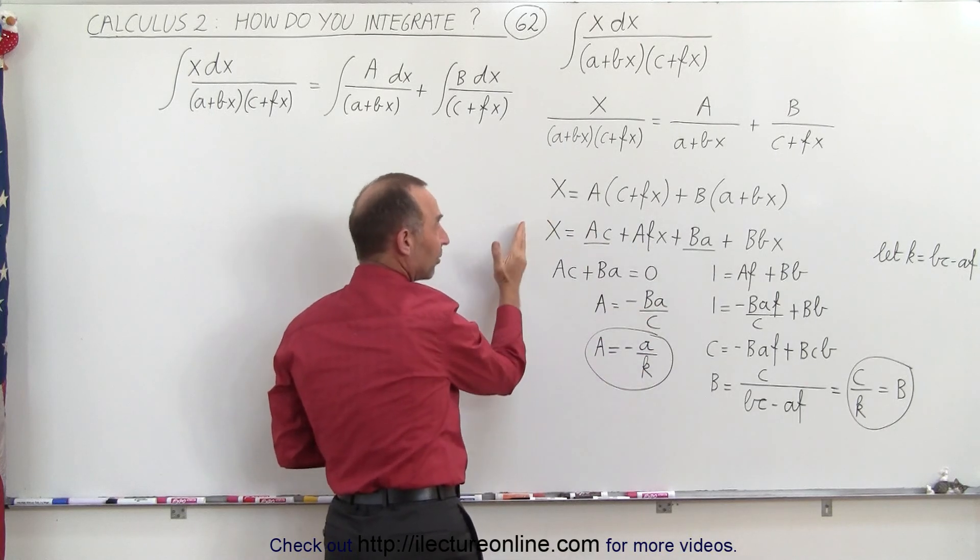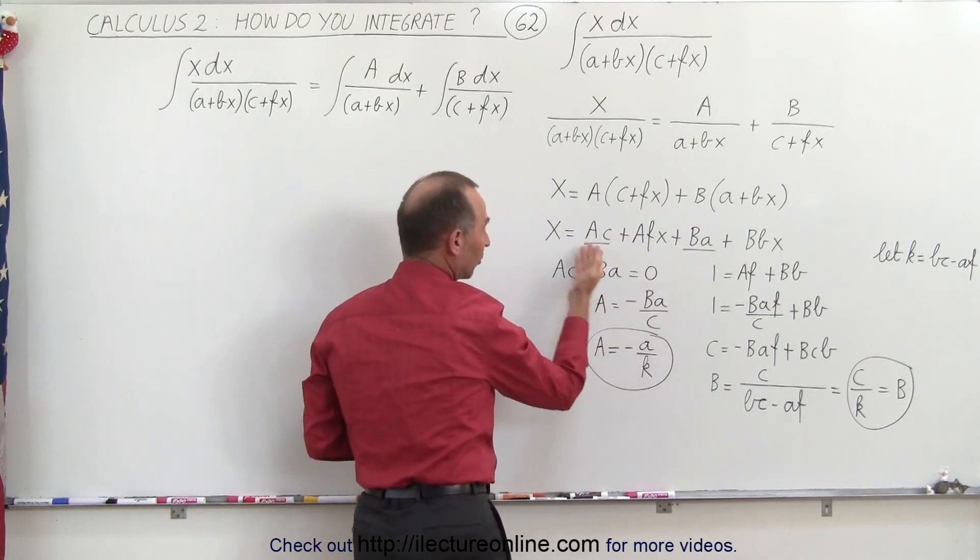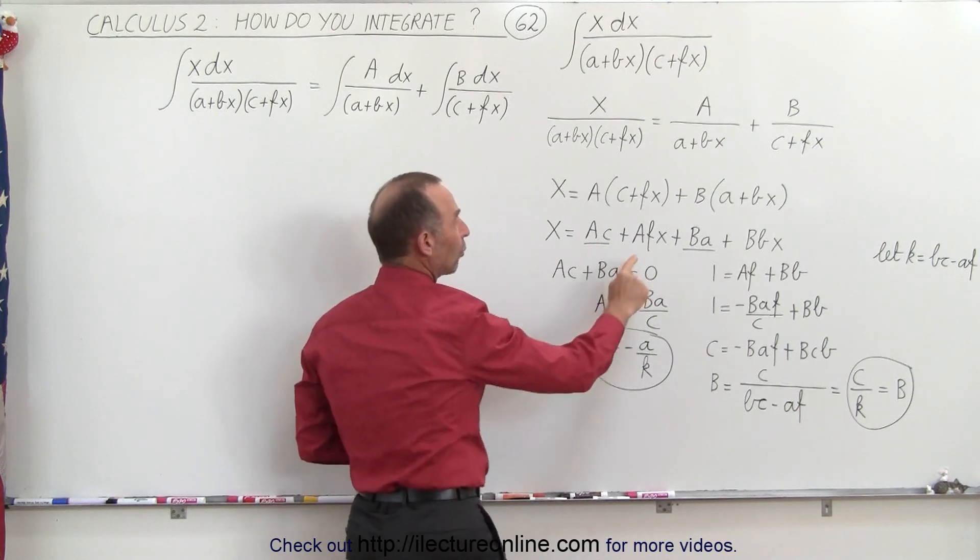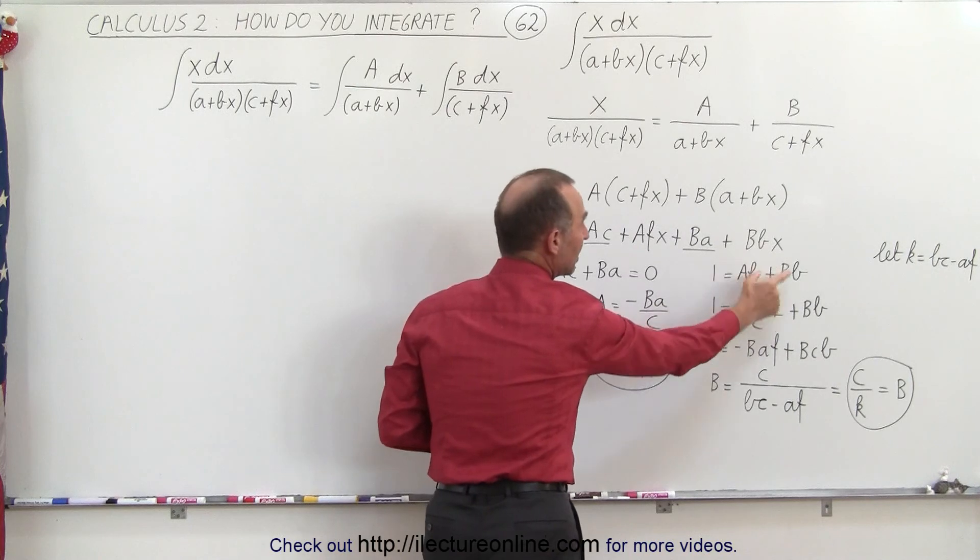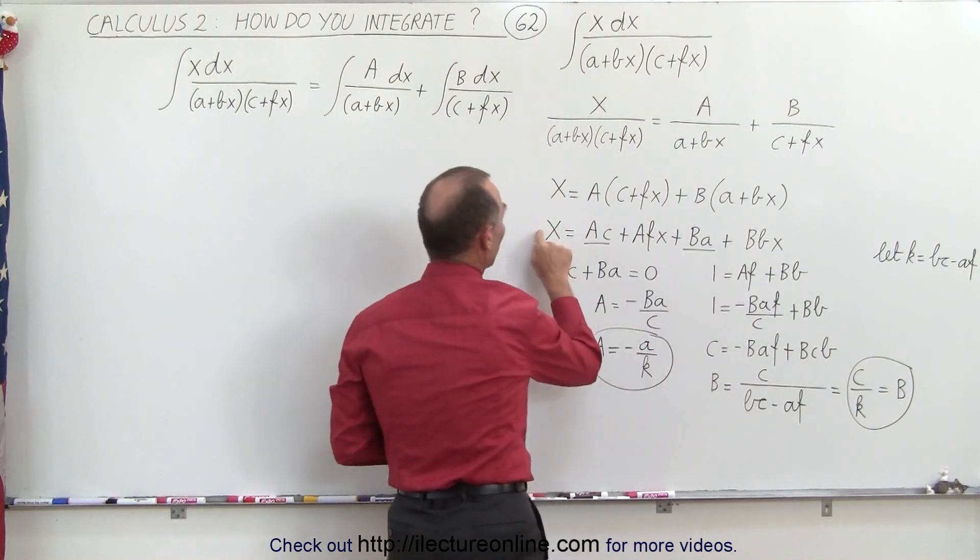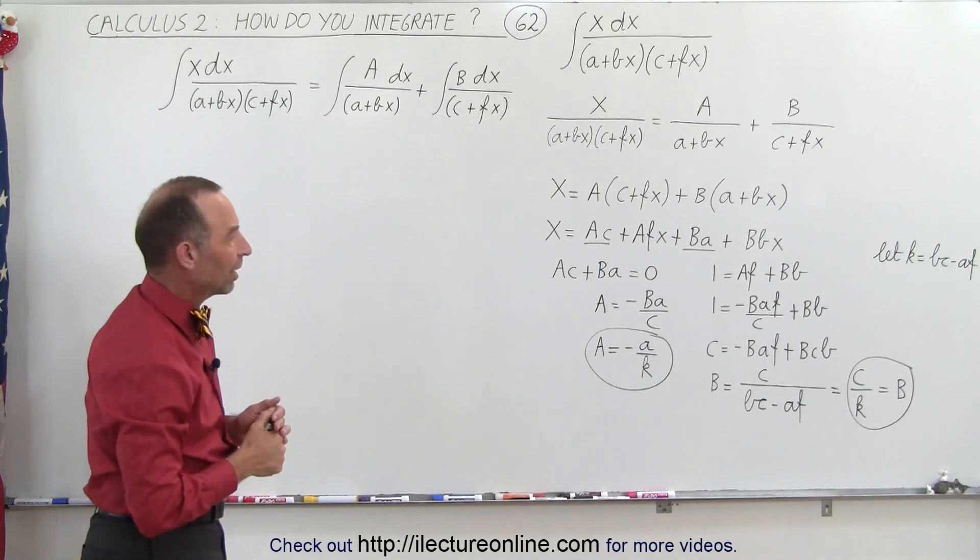Which means since we don't have a constant on the left side, Ac plus Ba must equal zero because there's no constant here, and the coefficients of the two terms that have an x, Af plus Bb must equal the constant one because that is equal to the coefficient in front of the x term on the left side.